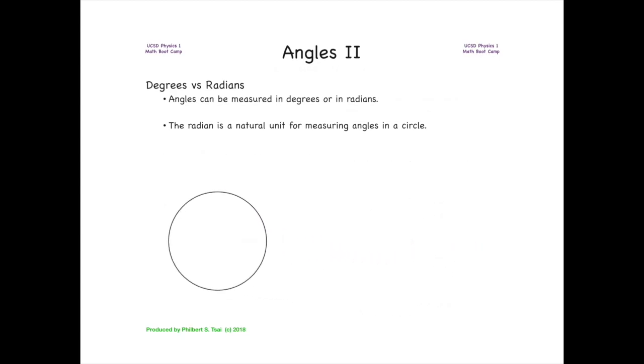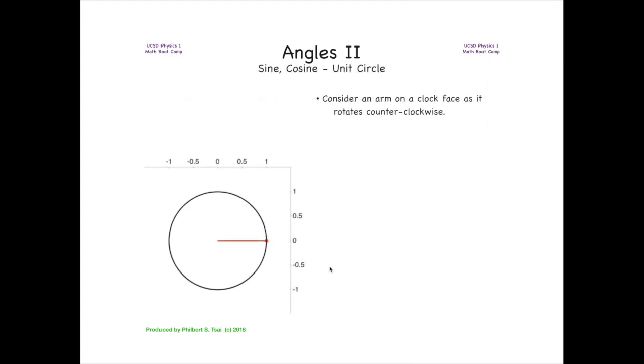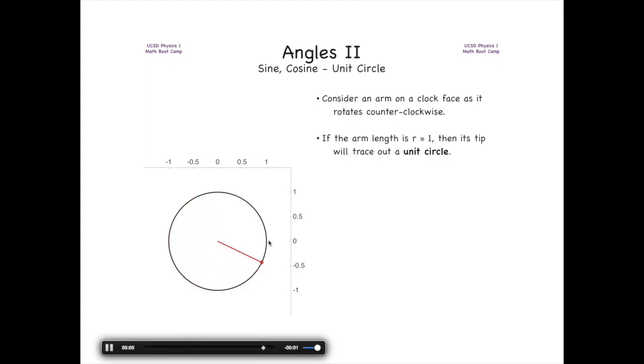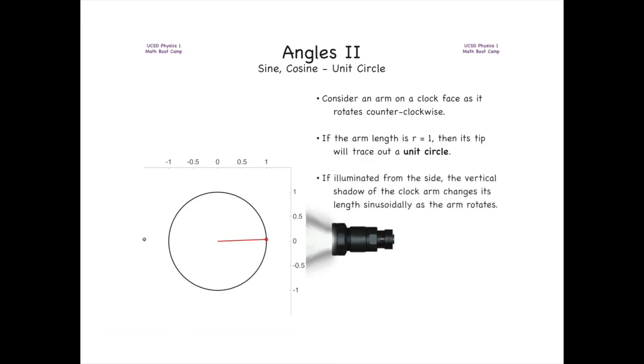Let's think of that unit circle as a clock face, where the clock arm rotates counterclockwise around that circle. If the arm length is defined as having a radius of one, then the tip will trace out a unit circle. If we illuminate the clock from the side, the vertical shadow of the clock arm changes its length sinusoidally as the arm rotates.